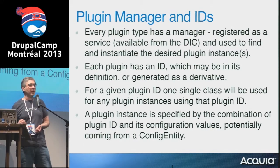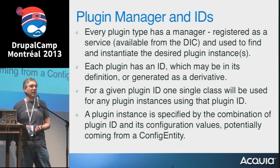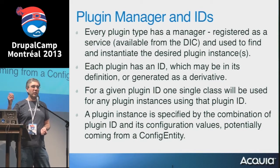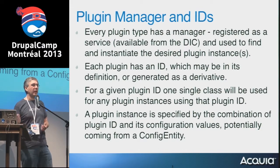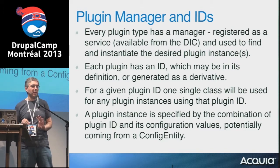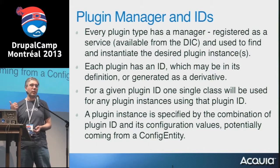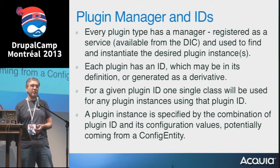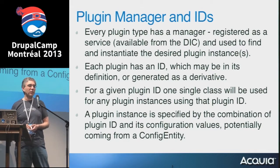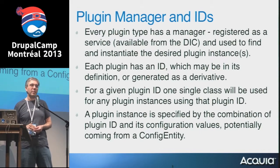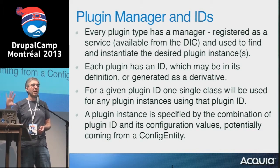One key difference: we associate every plugin type with a plugin manager, which is a service on the dependency injection container. You can say 'container, give me the search plugins manager,' and it gives you back this manager as a service. The manager knows how to find all the search plugins and give you an instance of any or all of them. This allows your code to be very agnostic — you don't know how to instantiate the plugins, you don't need to know about their dependencies. Just: container, give me the manager; give me an instance corresponding to this ID; now call the method on it.